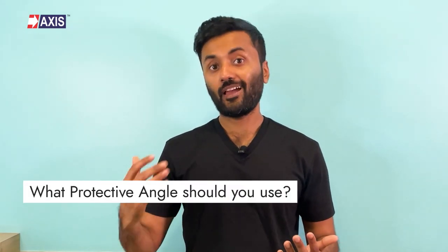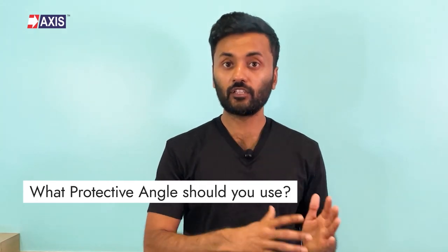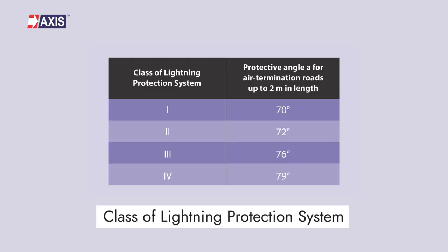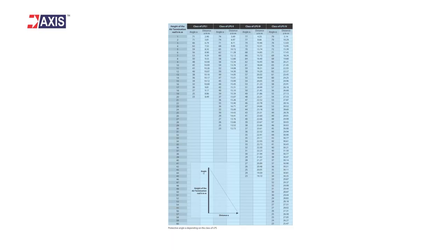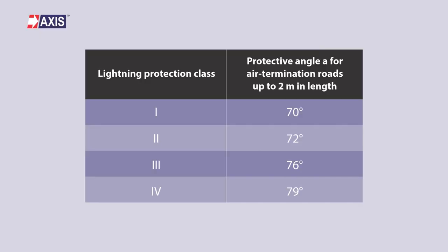What protective angle should you use for designing your system? The angle depends on the class of lightning protection system and the height of the rod. It is determined from Table 2 of IEC 62305 Part 3 as shown here. For simplifying it further, here's the table showing the protective angle for air termination rods that are up to 2 meters in length.